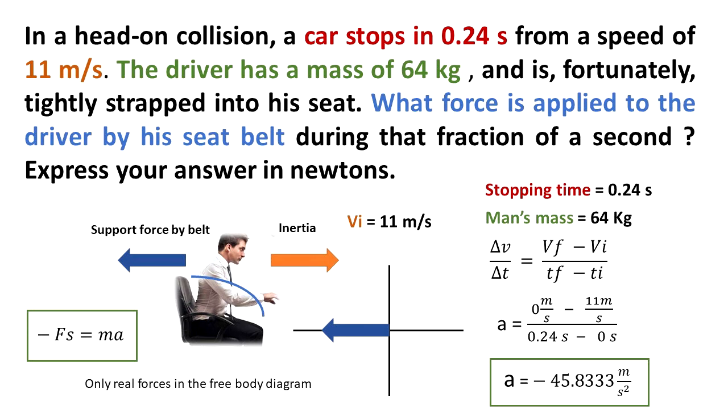That's more than gravity because remember gravity is 9.8 meters per second squared. That's almost five times gravity. That's why people get hurt when there is an accident, because the acceleration is very high. In some accidents, a high acceleration like this could break bones.